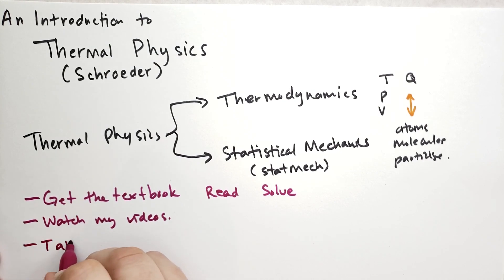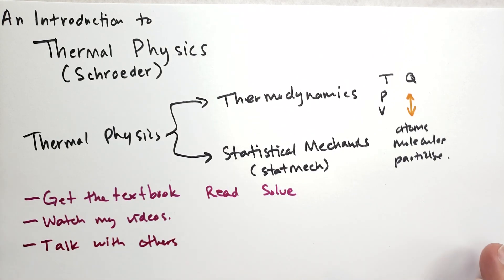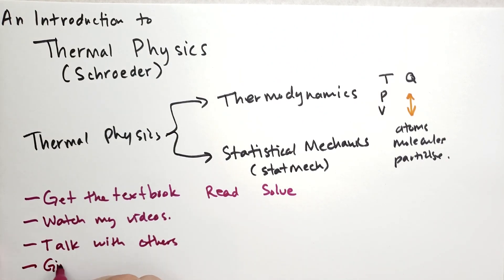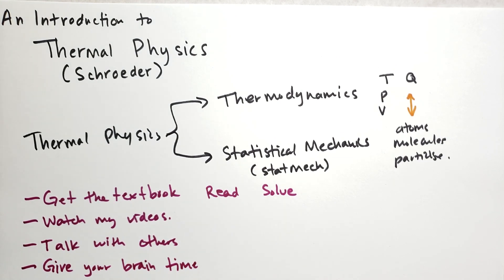You also want to talk with others — other physics students, physicists who have already learned this material, and even people who aren't physicists. Discussing the ideas you're learning with people will help reinforce those ideas and clarify what's really important. The last thing is to give your brain space. How many times have I been studying something complicated, just don't get it, then give myself one or two nights to sleep on it, and wake up with a really solid understanding? Just give your brain time to digest it.